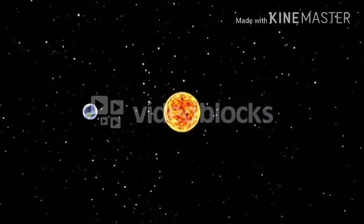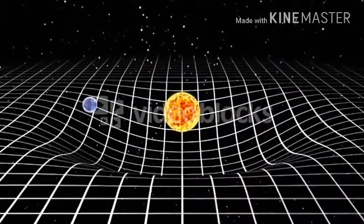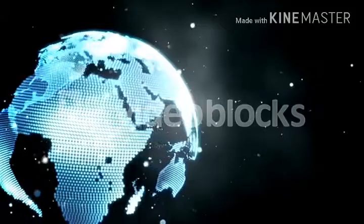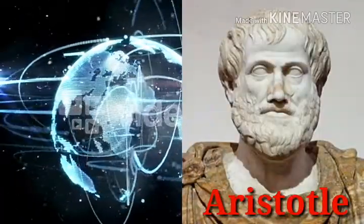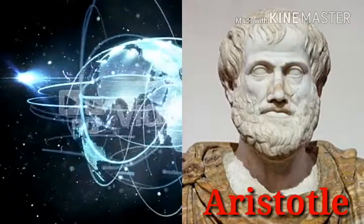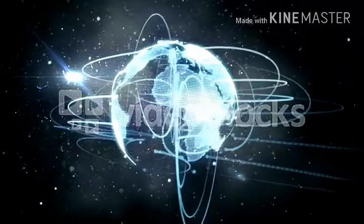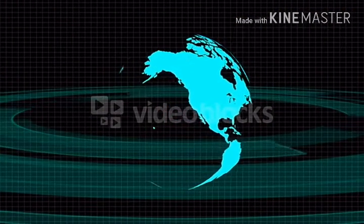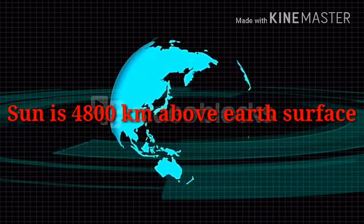We know the earth is revolving around the sun — ancient Greek scientists proved that. But is it real? Ancient Greek scientist Aristotle at 350 BC told that the earth is spherical. But in 1881, Samuel Rowbotham said that the earth is flat, and the North Pole is at the center of the earth, and the sun and moon are 4800 kilometers above it.